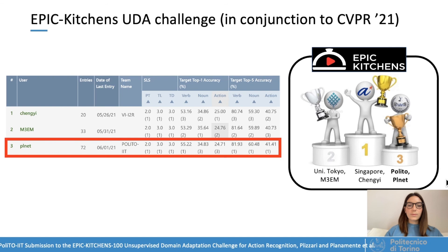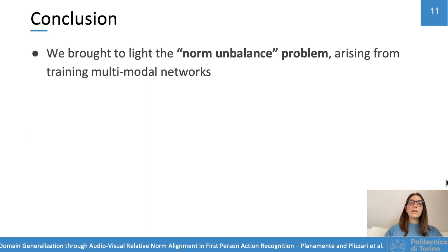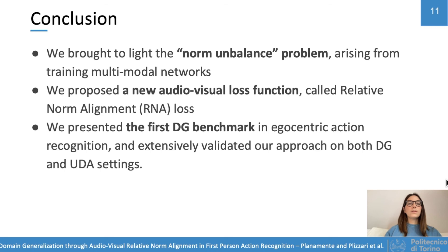This method also achieved third place at the Epic Kitchens unsupervised domain adaptation challenge, held in conjunction with CVPR 2021. In conclusion, we brought to light the norm imbalance problem and addressed it through a new audio-visual loss function. Moreover, we present the first domain generalization benchmark using egocentric action recognition, and validate our approach on both domain generalization and unsupervised domain adaptation settings.